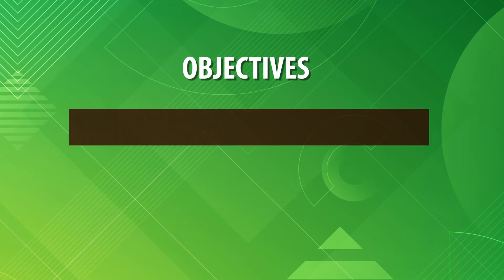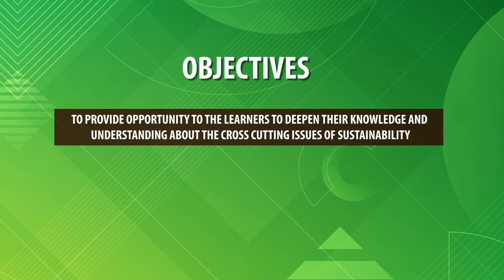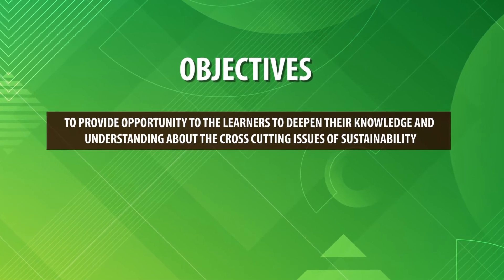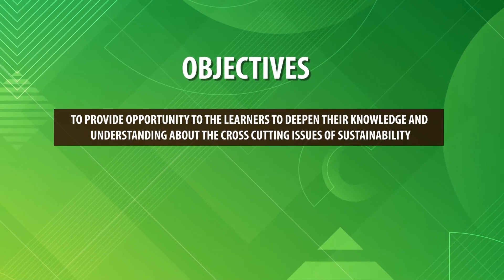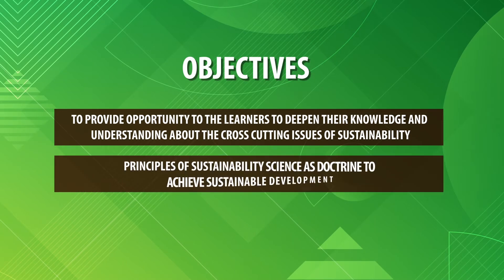Sustainability science is described as the science of sustainable development. IGNOU's vision for this course is to encourage and promote research and education in interdisciplinary areas of sustainability, for bringing effective policy in planning and developing a sustainable nation, taking key roles in global economic efforts of achieving Sustainable Development Goals by 2030. The major objective of this course is to provide opportunity to learners to deepen their knowledge and understanding about the cross-cutting issues of sustainability and the principles of sustainability science, which is one of the doctrines to achieve sustainable development.